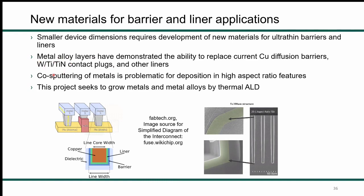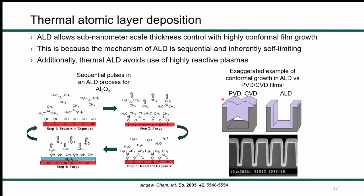There's been a drive to replace the entire contact plug with some other material, and recently the literature reports co-sputtering of metal alloy layers that can replace both current copper diffusion barriers and the entire contact plug architecture. However, in high aspect ratio features, co-sputtering is problematic. Therefore our project seeks to grow metals and metal alloys using thermal atomic layer deposition. We use thermal ALD for a couple of reasons: ALD allows sub-nanometer scale thickness control as well as highly conformal film growth, because the ALD mechanism is sequential and therefore inherently self-limiting.